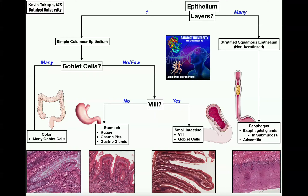The first segment we're going to look at is the esophagus. This is the easiest one to identify because it's the only one whose epithelial tissue is stratified squamous epithelium. Following the flowchart, you ask yourself how many epithelial layers there are. If there's one layer, it's going to be the colon, stomach, or small intestine. But if it has many layers and they're clearly stratified squamous epithelium, you only have one choice: the esophagus.